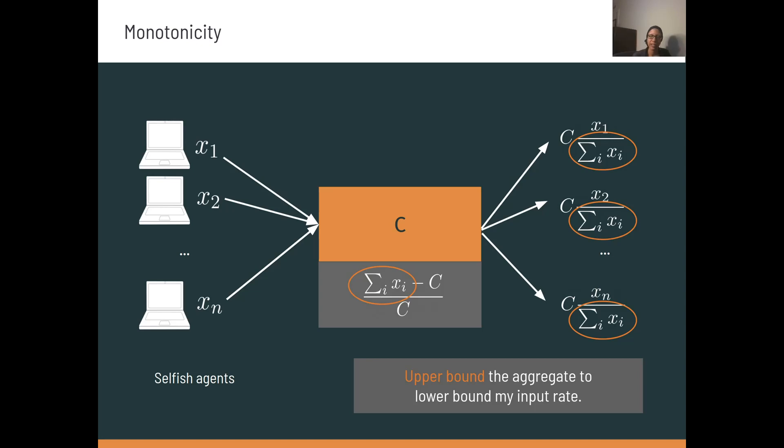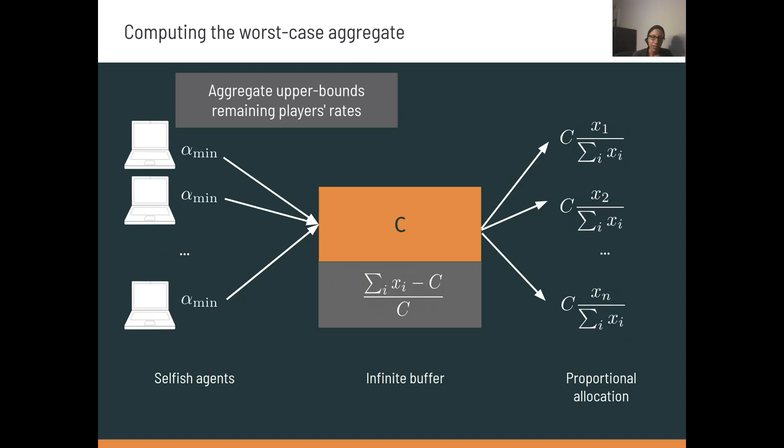This means that if we can upper bound the value of that competing aggregate, this gives us a lower bound on the input rate of the last sender. If the aggregate decreases from that upper bound, the remaining sender's rate will only increase. In order to derive this upper bound, we'll consider a corresponding worst case game in which all players have the same utility as the least delay sensitive player. Intuitively, as the players in the game get more competitive, or less delay sensitive, the equilibrium aggregate increases. We show in our paper that the aggregate in this equilibrium upper bounds the aggregate in the original game, and in fact, it upper bounds the aggregate in any game where the minimum value of alpha is this alpha min, the least delay sensitive player.